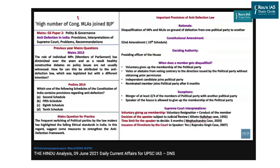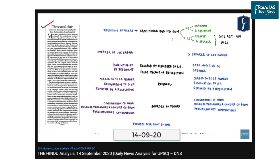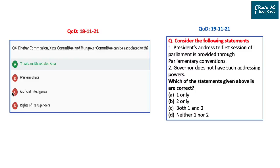To study more on how the anti-defection law defines the process in Parliament, you can go through the Hindu Analysis or Daily News Simplified dated 9th June 2021, for which we have already provided the link in the description box. If you want to read more on the role of the Speaker — powers, limitations, and controversies — you can go through the DNS dated 14th September 2021, link also in the description box. With this, we end today's Daily News Simplified. Thank you.